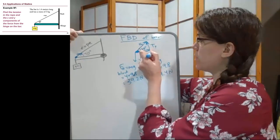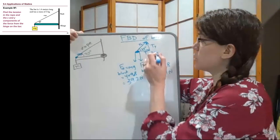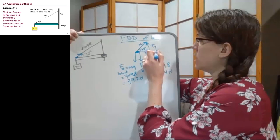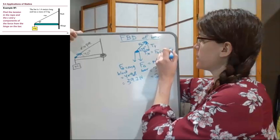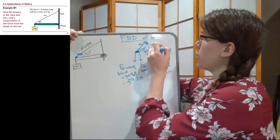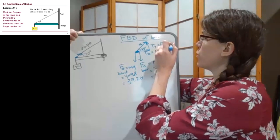And just to make it really clear for ourselves, that Tx component, the horizontal piece, is the tension times the cosine of 40 degrees. And the Ty component is the tension times the sine of 40 degrees.